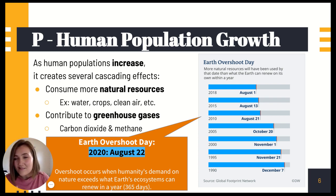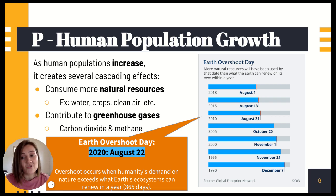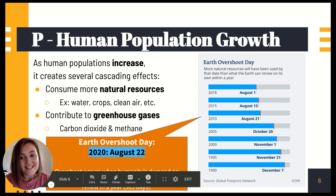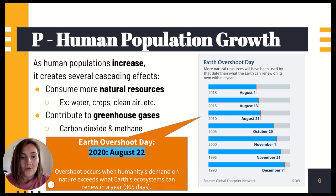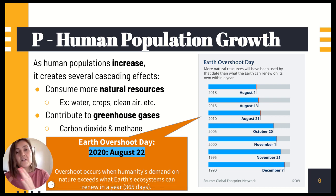For 2020 there's a little bright note — Overshoot Day was actually August 22nd. If you look two years prior in 2018, that was August 1st, so we extended it by 22 extra days, which is good, but the reason why is because of COVID. Over the last 30 years, starting in 1990, we had used up all of our natural resources that ecosystems can renew by December 7th — it should be by December 31st.